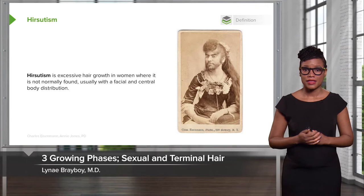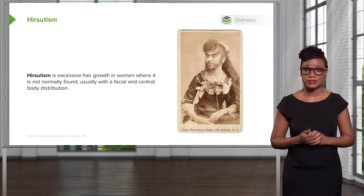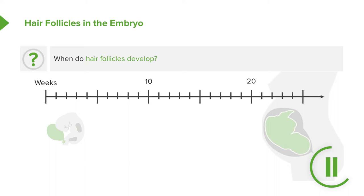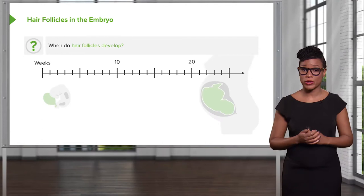Let's talk about hair follicles in the embryo. When do hair follicles actually develop? Eight to ten weeks is usually when we see hair follicles develop from the epidermal cells.